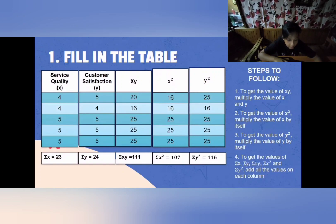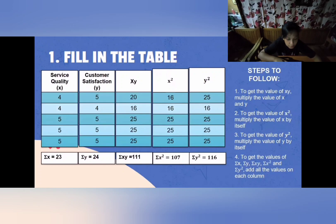The summation results are as follows: summation of x — 4+4+5+5+5 = 23. Summation of y — 5+4+5+5+5 = 24. Summation of xy — 20+16+25+25+25 = 111. Summation of x squared — 16+16+25+25+25 = 107. Summation of y squared — 25+16+25+25+25 = 116. It's very easy to fill in the table by simply following those steps.